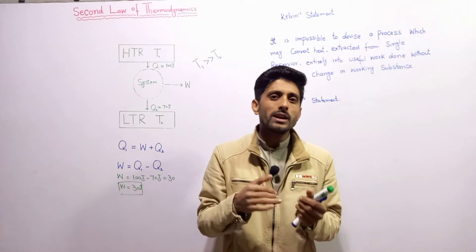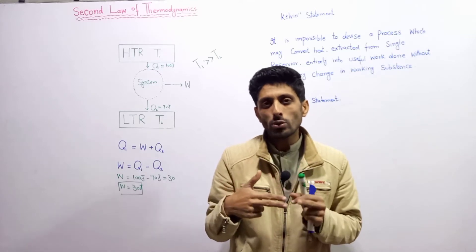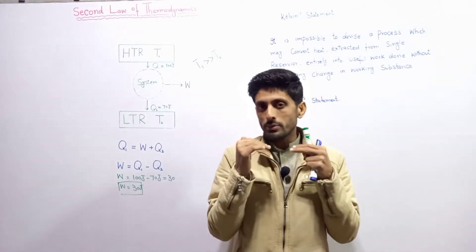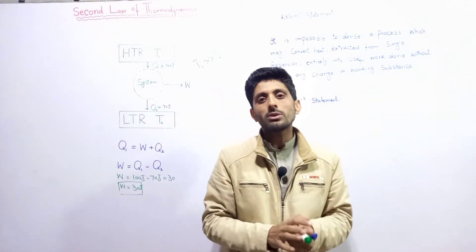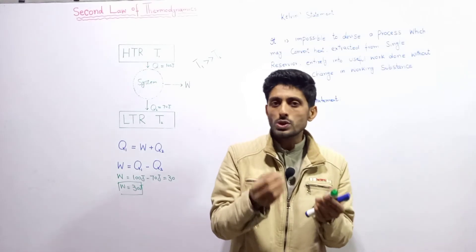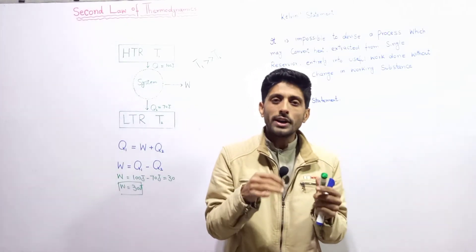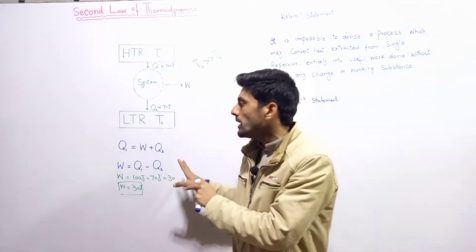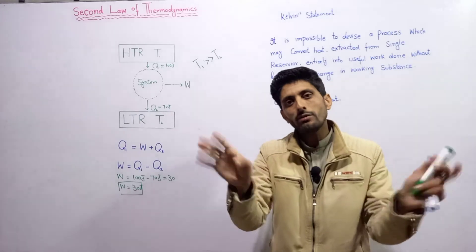The second law of thermodynamics tells us: for heat flow, two bodies at two different temperatures must exist; heat flows from high to low temperature; some part of the absorbed heat is converted into work done; and the remaining part is expelled. This is unlike the first law, which would suggest that in an isothermal process, the totally absorbed heat is entirely converted into useful work done — but that does not actually happen.